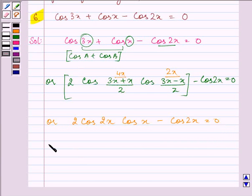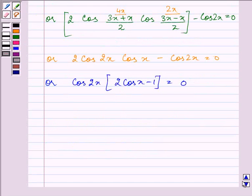Let us take cos 2x common and we are left with 2 cos x minus 1 is equal to 0. We have cos 2x times 2 cos x minus 1 is equal to 0. Let us solve it.